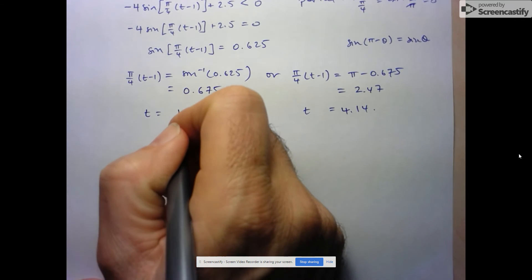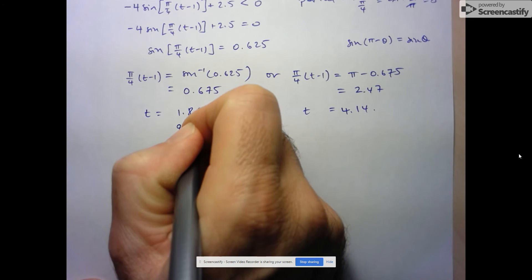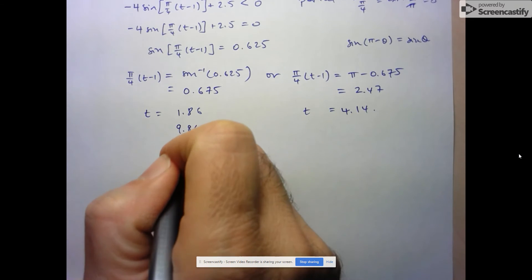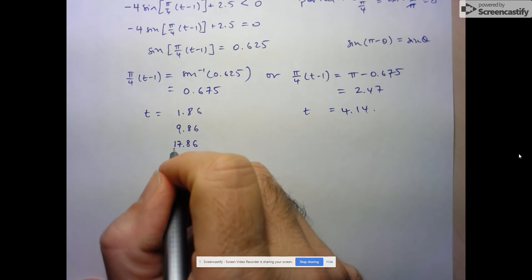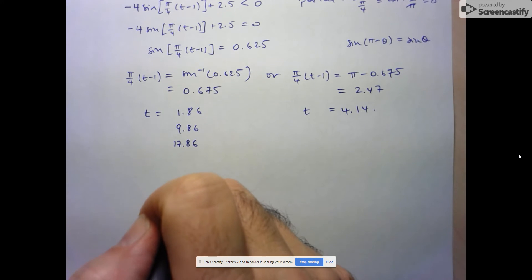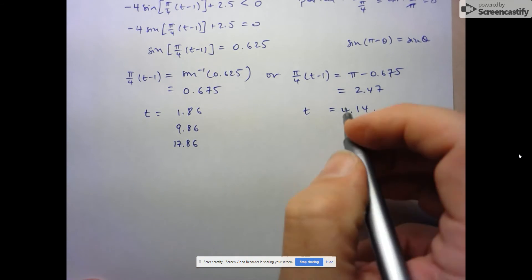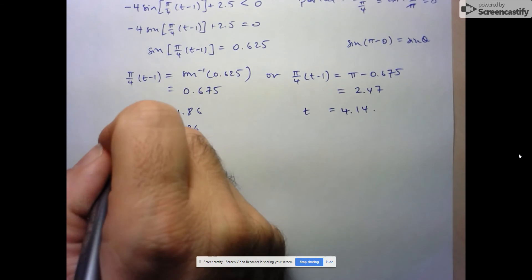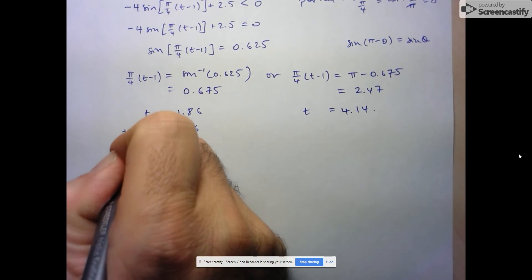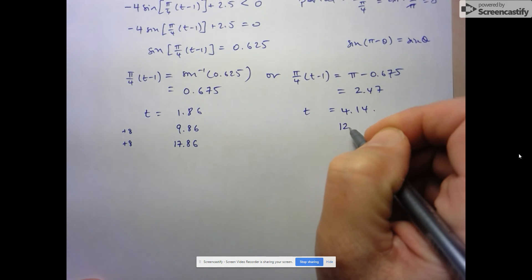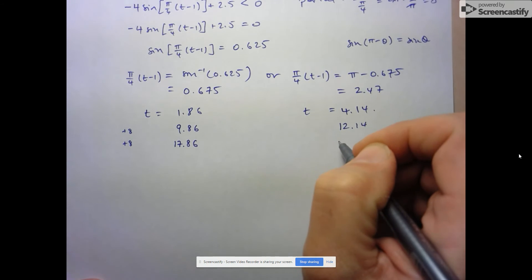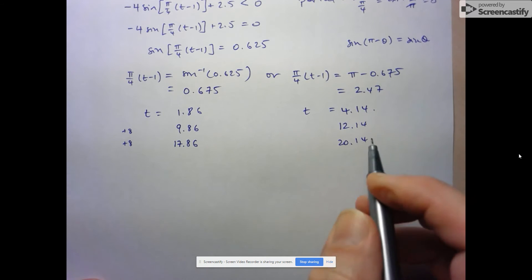So now what we're going to do is we're just going to keep adding 8 to these numbers until we get past 24, and then we're going to stop. So adding 8 gives us 9.86, and then 17.86. If I add 8 again, I'll be beyond 24 seconds. For the other value, adding 8 gives us 12.14, and adding 8 again gives 20.14. But if I add 8 to that, I'm going to be beyond the 24 seconds.